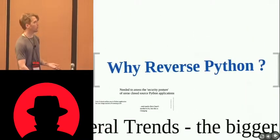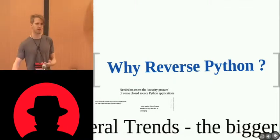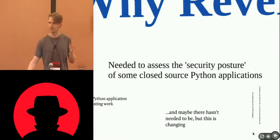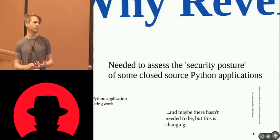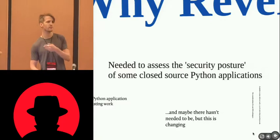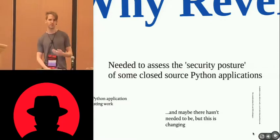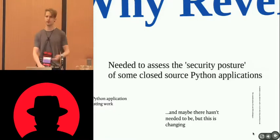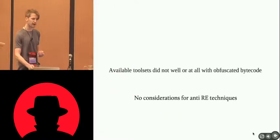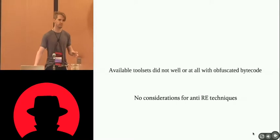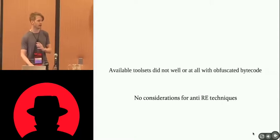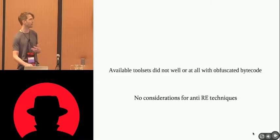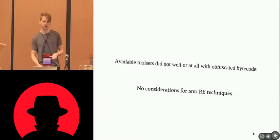Why are we reversing Python? Why bother at the Python layer rather than dropping into a debugger and looking at C? There was a security posture of some applications that needed to be looked at. We wanted to assess how well the Python was being coded, not how well the runtime was implemented. Working at the Python layer lets you assess the application's code rather than the underlying runtime's code. We found that available toolsets worked fine on standard Python, but as soon as anyone tried to obfuscate or apply anti-reversing techniques, everything fell down.